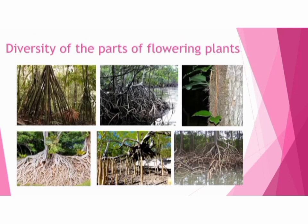Our next topic is the diversity of the parts of a flowering plant. You may have observed various kinds of plants — the parts are also different from each other in color, shape and size. In these pictures you can see some different kinds of roots, which are also different in shape, size and color.